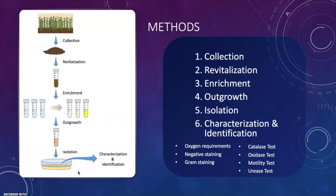The methods for this project consist of six basic steps: collection, revitalization, enrichment, outgrowth, isolation, and finally characterization and identification. This last step is where we take each specific test to determine the genus based on a dichotomous key and these specific tests.